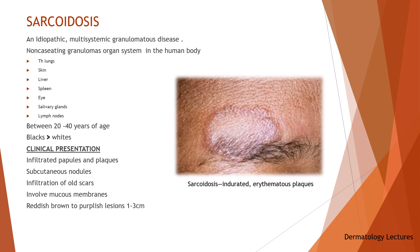Sarcoidosis is an idiopathic multisystemic granulomatous disease first described by Hutchinson in 1877. It is characterized by the formation of non-caseating granulomas in virtually every organ system in the body, most commonly in the lungs, skin, liver, spleen, eyes, salivary glands, and lymph nodes, particularly the mediastinal lymph nodes. The exact incidence of sarcoidosis is unknown, although it can occur at any age. Young adults between 20 to 40 years are at higher risk. Blacks have a higher incidence of sarcoidosis than whites and are more likely to have widespread chronic disease.